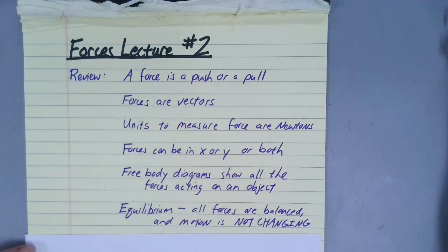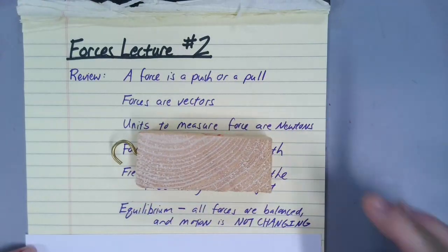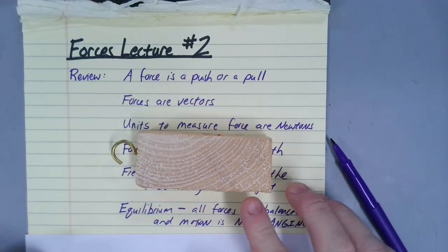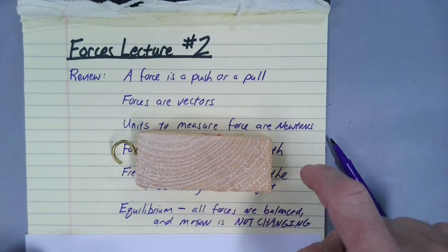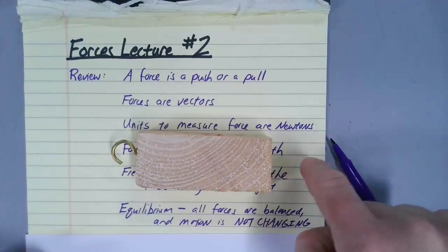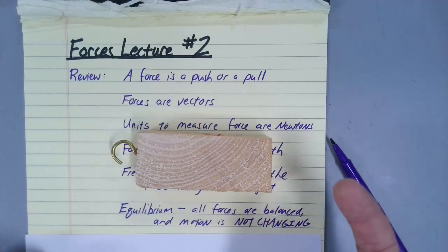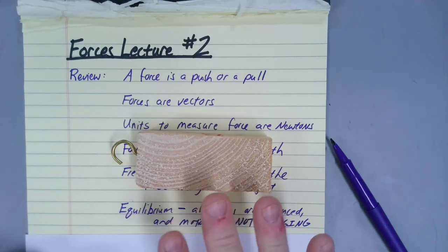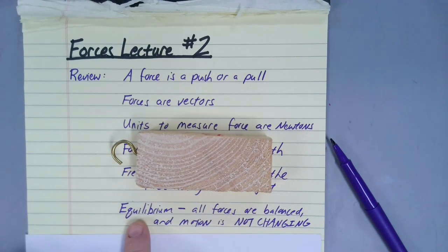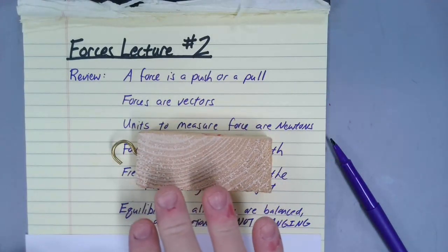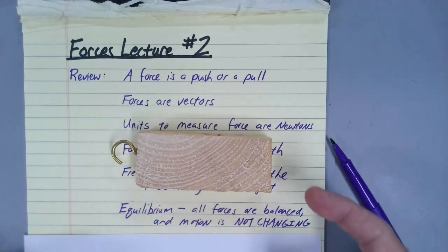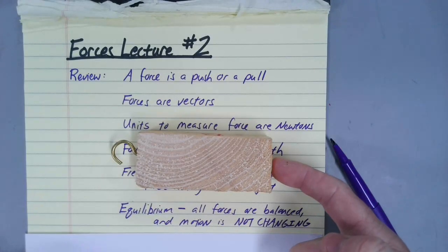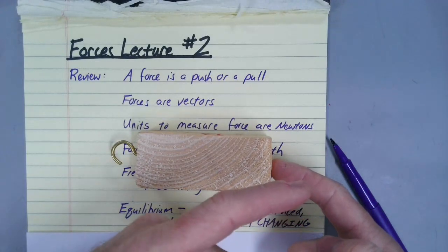Equilibrium is where all of the forces are balanced and the motion is not changing. For example, this wood block right here — there's a force pulling down because of its weight, the table pushes back with a normal force. Forces are present but the motion of the block is not changing. This is a state we call equilibrium, where all of the forces are balanced.